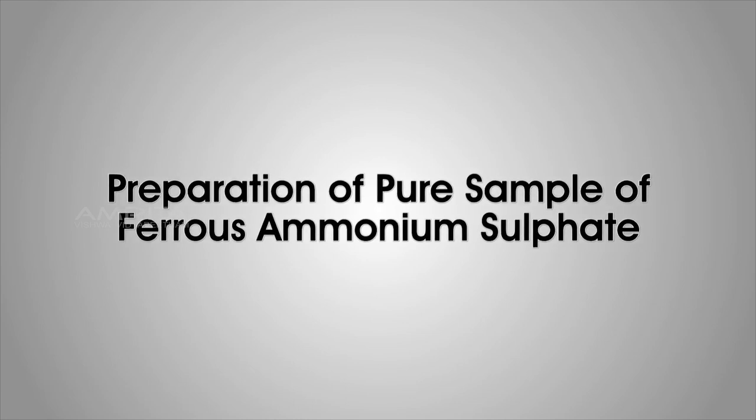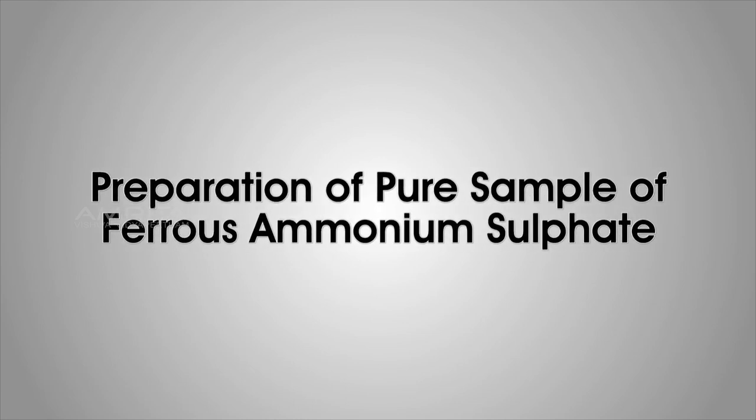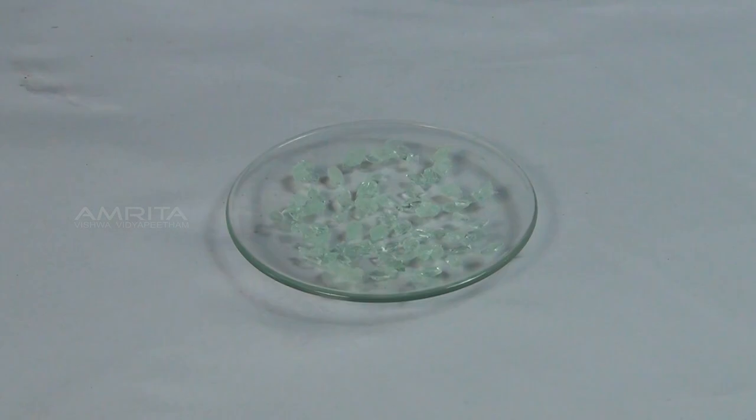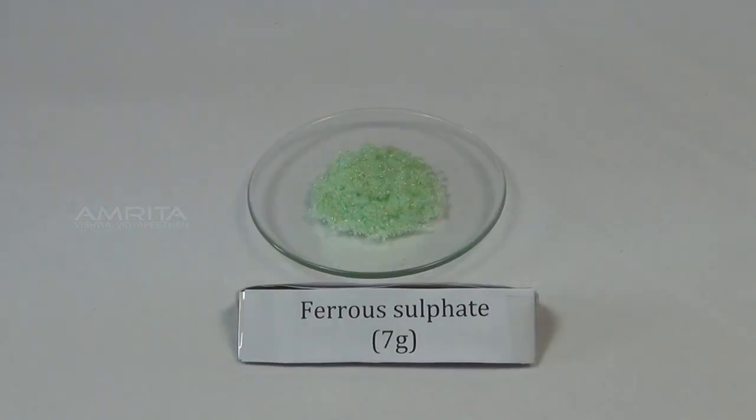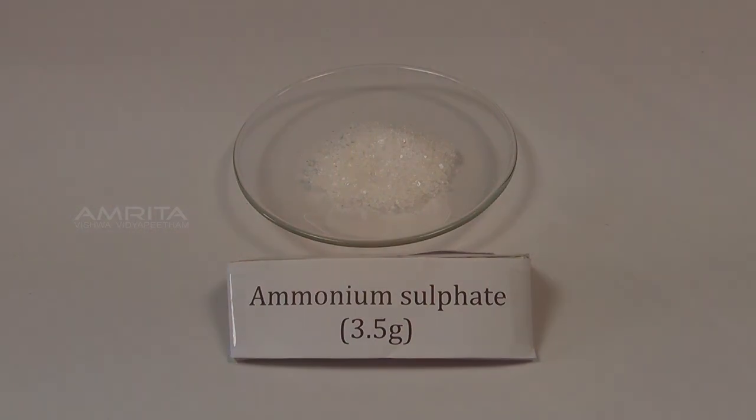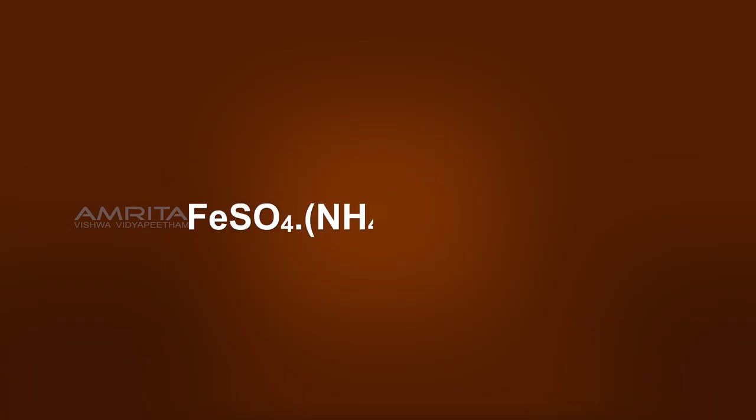Preparation of pure sample of ferrous ammonium sulphate. Ferrous ammonium sulphate is a double salt of ferrous sulphate and ammonium sulphate. It has the formula FeSO4·(NH4)2SO4·6H2O.